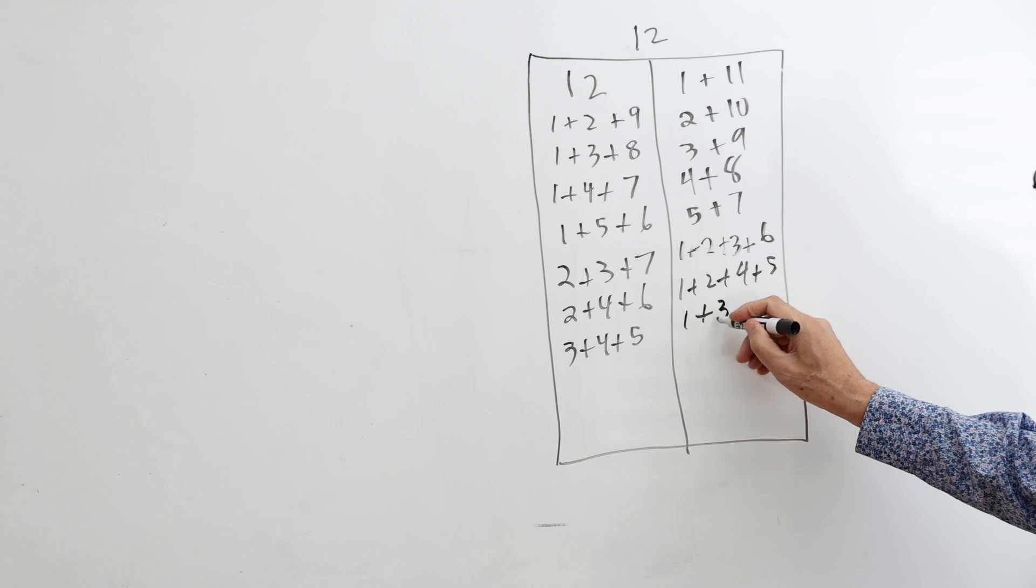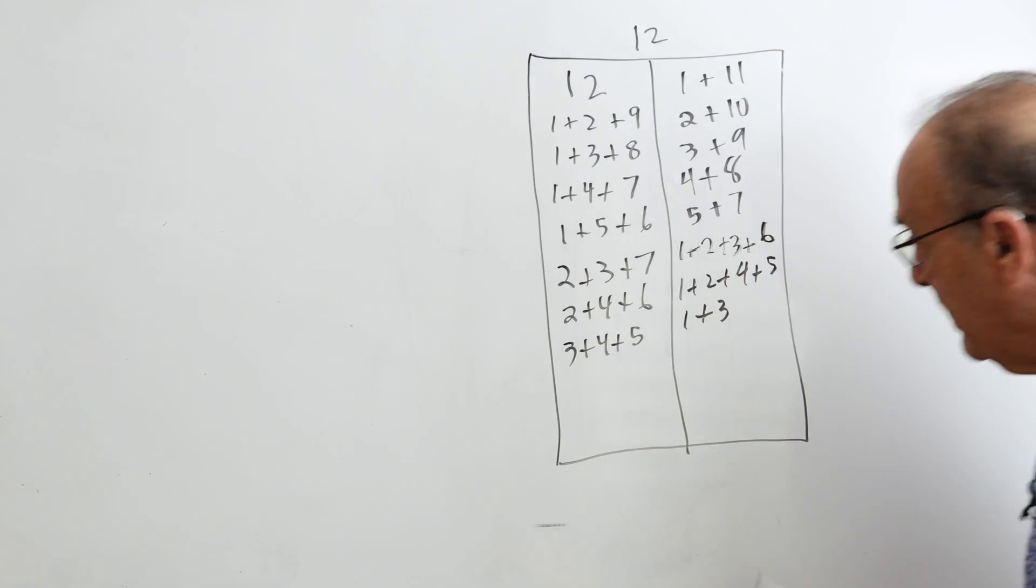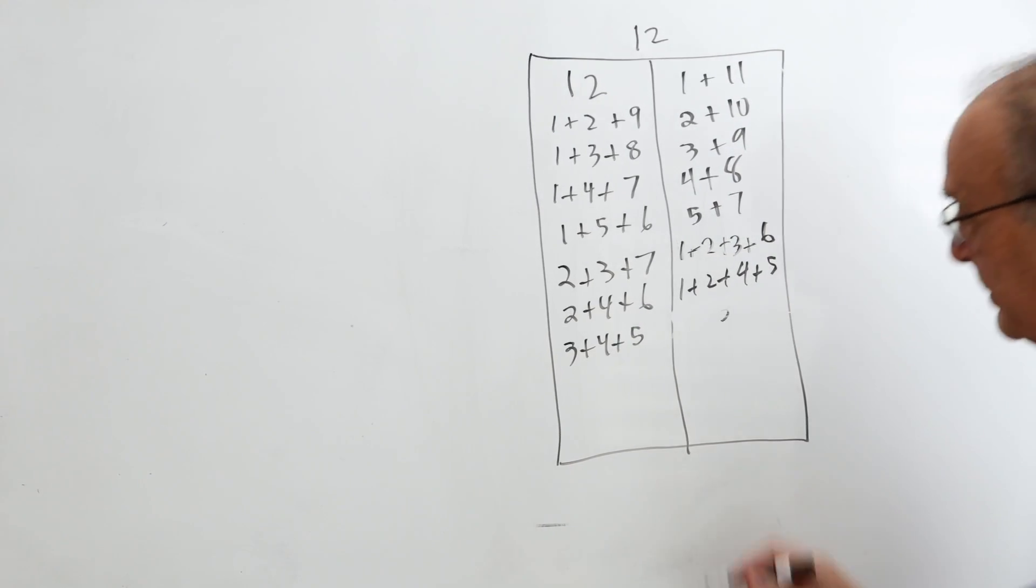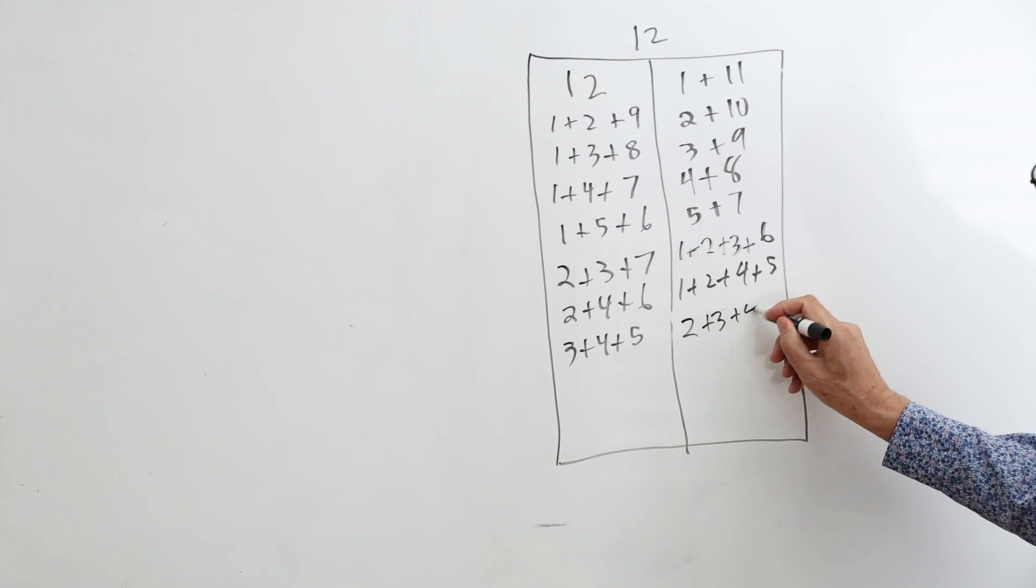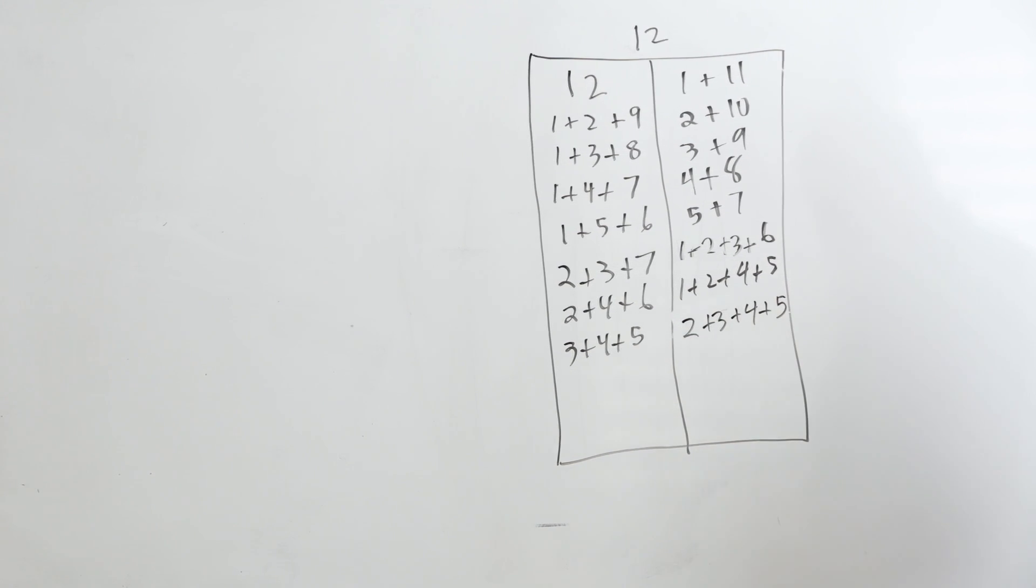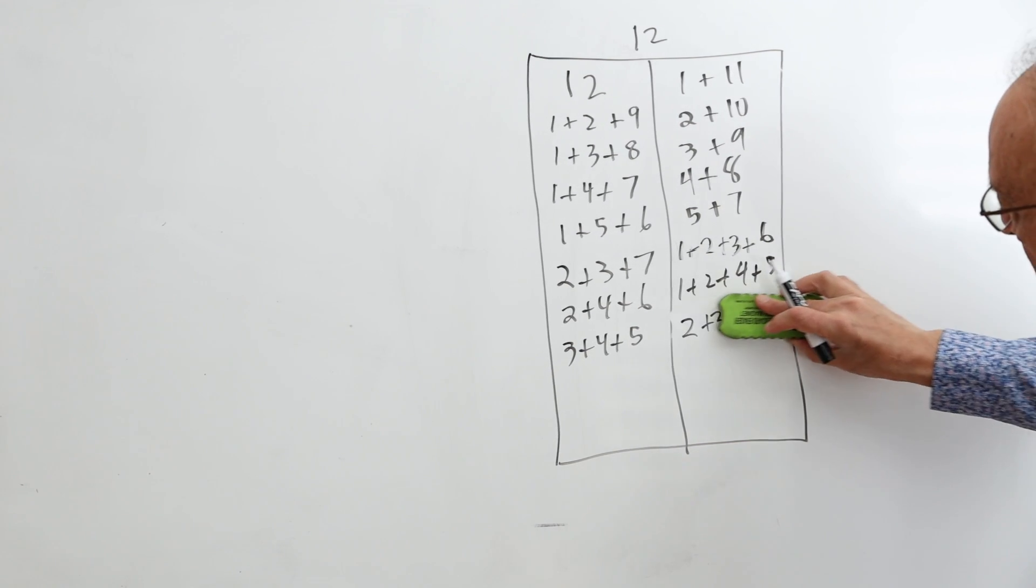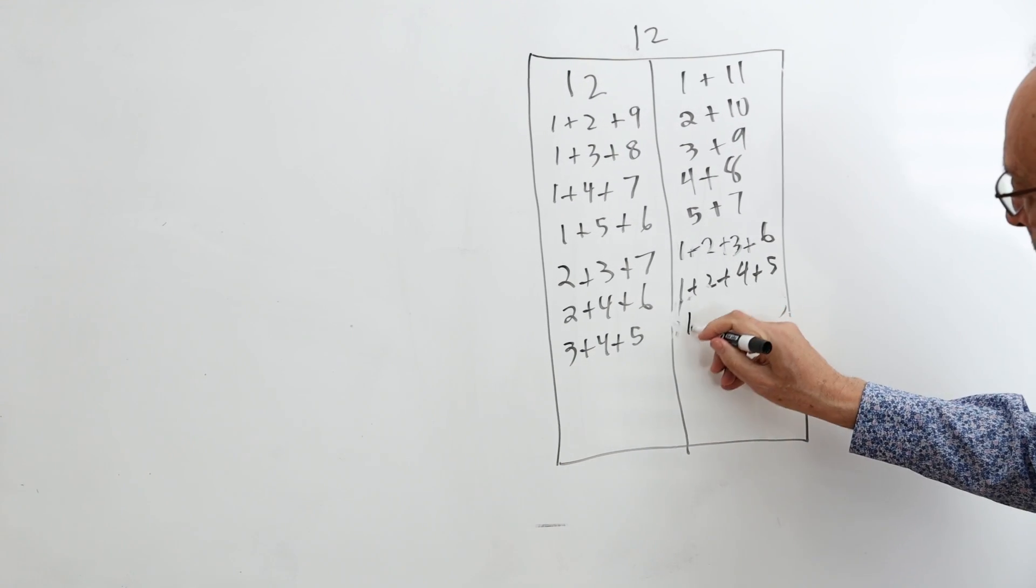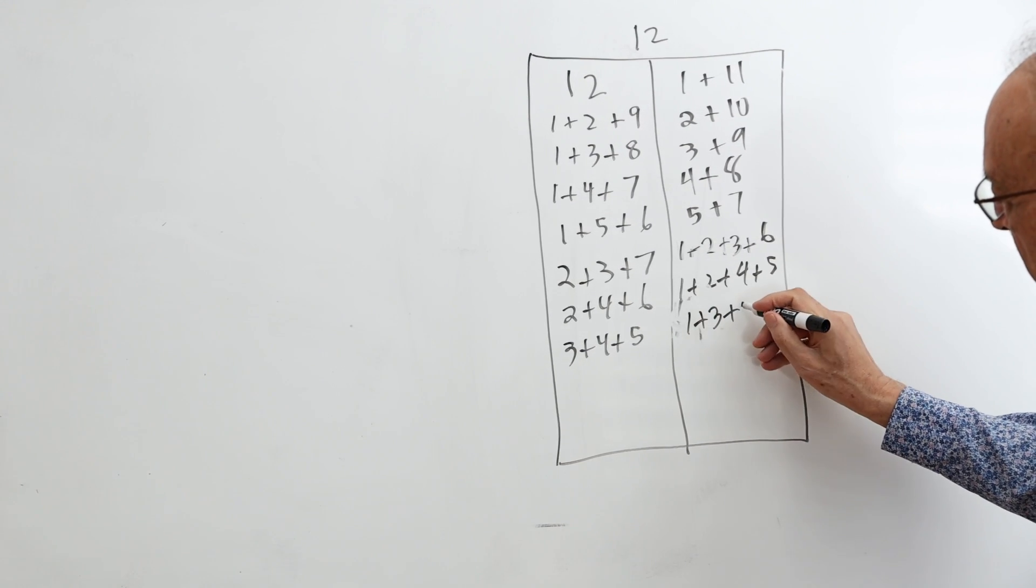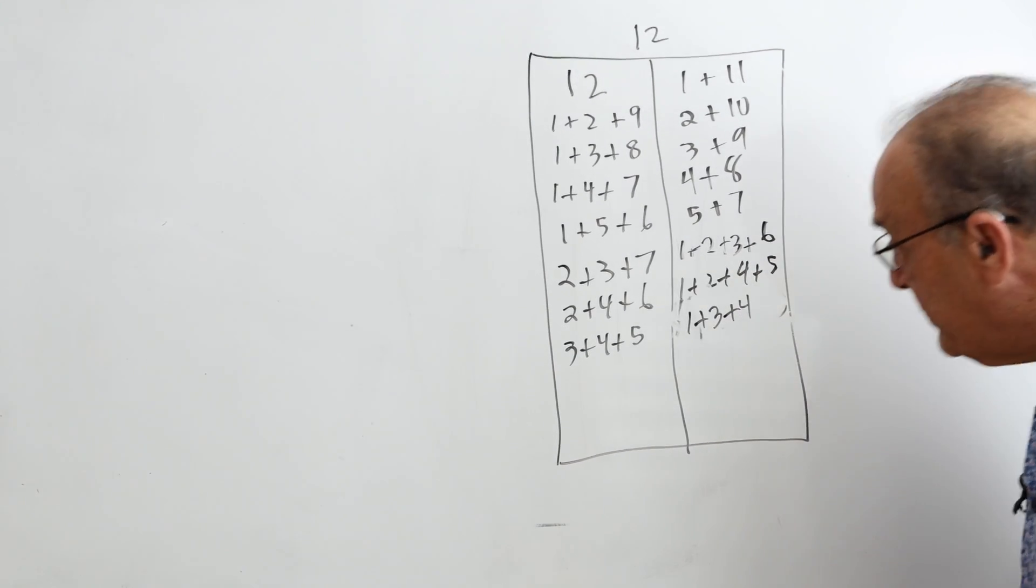1 plus 3, well, I can't do that because that would be too big. So let me try doing it like this. 2 plus 3 plus 4 plus 5. No, that's too big also. So maybe I can start with 1 and 3. That would be 1 and 3 plus 4. That's also too big. So I might be done now.